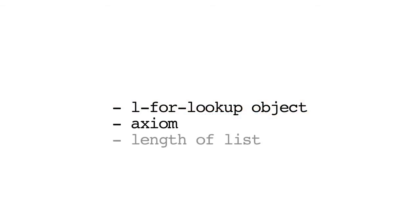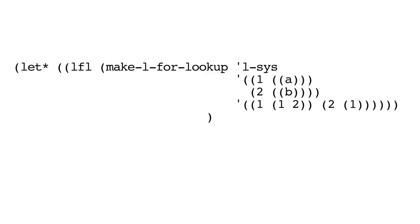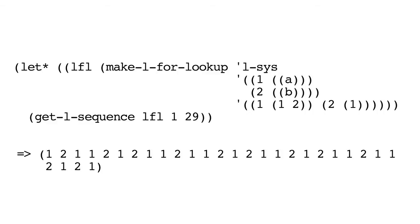So how do we use this object? We can call several methods. The simplest method would be get-L-sequence. This doesn't actually require the lookup elements we've just described. What we do need is the L-for-lookup object, an axiom to start with, and the length of the list to return. Given this make-L-for-lookup object, if we call get-L-sequence using that object, starting with the axiom 1 and asking for 29 results, we get the following list returned. You can see here that we're just returning the L-sequence, not using the lookup portion where A and B substitute for 1 and 2.